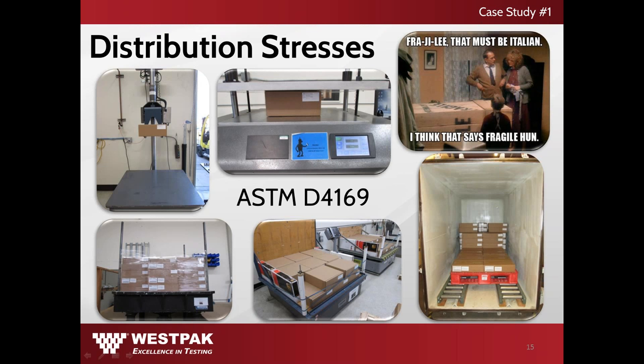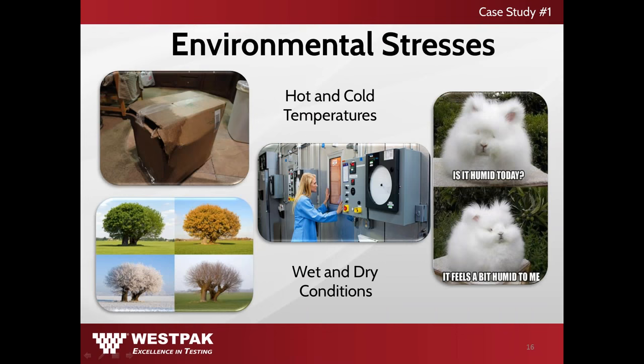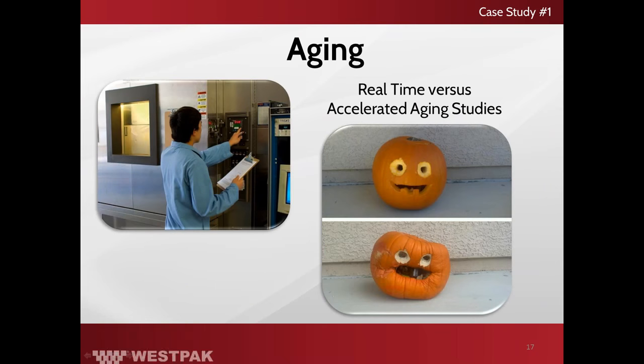Test inputs such as drops, compression, vibration, and high-altitude testing can all have an impact on the package system. Considering environmental stresses is also important — hot and cold as well as wet and dry conditions can potentially damage a package while being distributed. To ensure sterility and shelf life of a product and its package system, real-time and accelerated aging studies are also useful.